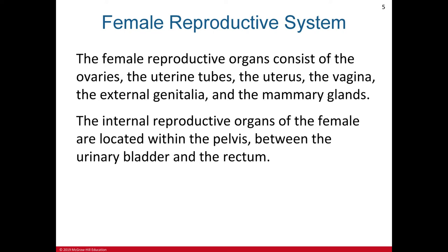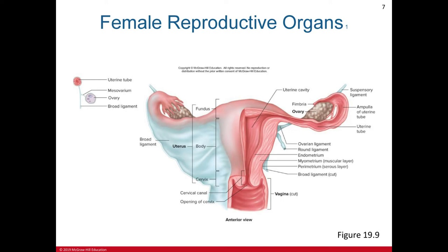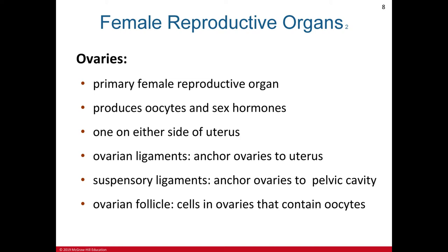Moving on to the female reproductive system: the female reproductive organs consist of the ovaries, uterine tubes (fallopian tubes), uterus, vagina, external genitalia, and mammary glands. The internal reproductive organs are located within the pelvis between the urinary bladder and the rectum. The uterus and vagina are in the midline, with one ovary on each side. These internal organs are held in place within the pelvis by a group of ligaments called the broad ligament.